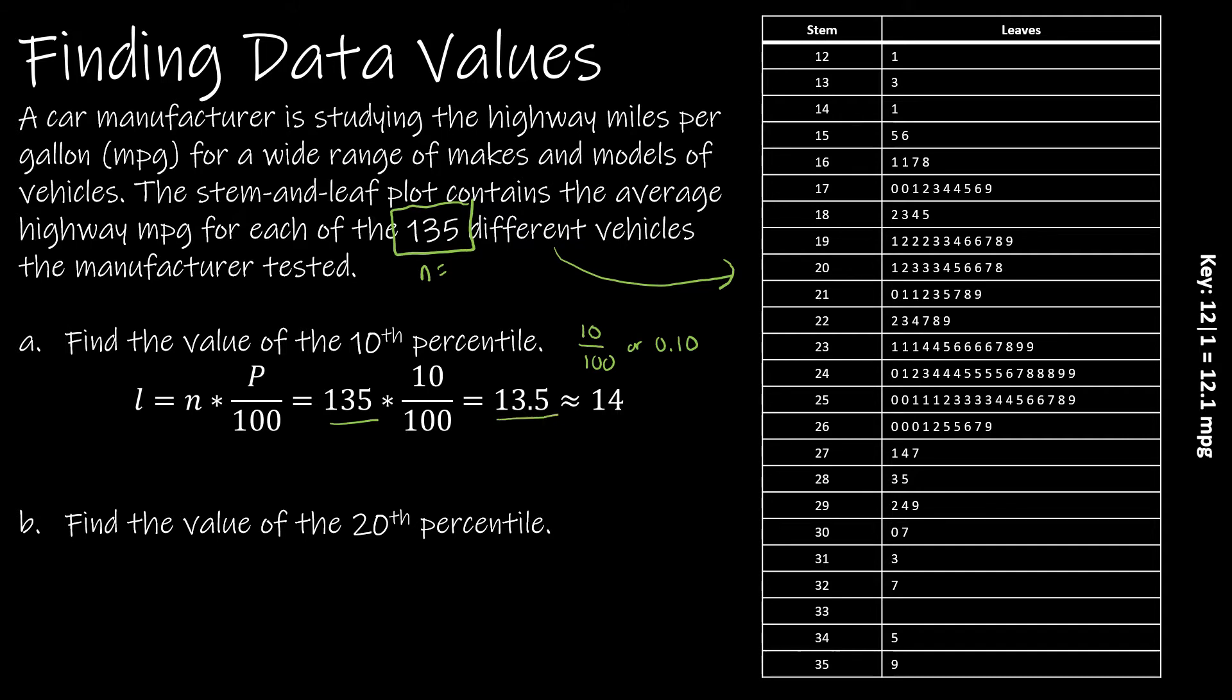I'm going to take 135 times 10 over 100, which gives me 13.5. Since it's a decimal, I round up to 14. So I want to find the 14th value in my data. Counting through: 1, 2, 3... 14. That is my 14th value. The key says that 12 and then the bar and then 1 means 12.1, so this means 17.3. The value at position 14 is 17.3 miles per gallon.